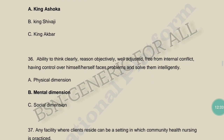Ability to think clearly, reason objectively, be well-adjusted, free from internal conflict, having control over oneself, and being able to face problems and solve them intelligently — what dimension of health is this? The options are physical, mental, or social dimension. This is the mental dimension of health.